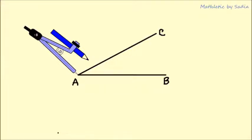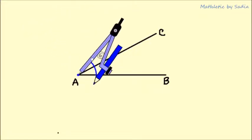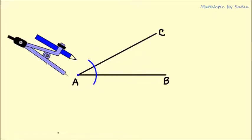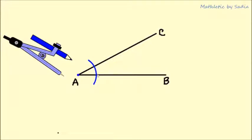The gap between the two legs must be fixed; you cannot change that. As we can see, the arc intersects lines AC and AB at two points. Place the needle at the first intersecting point.